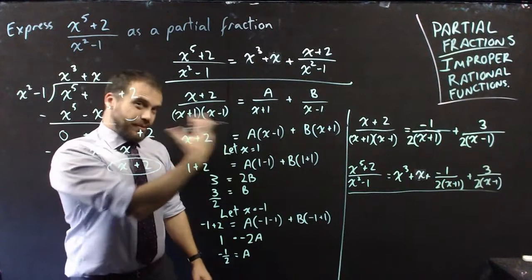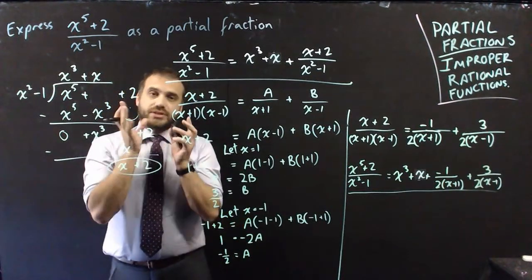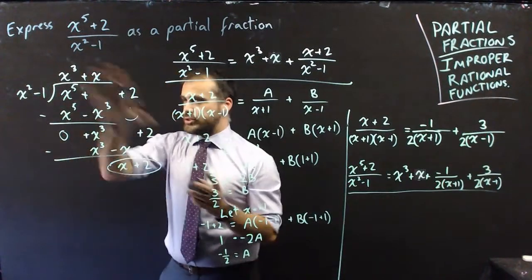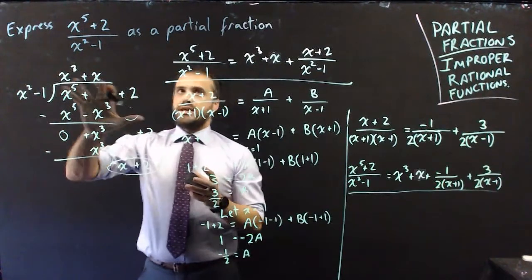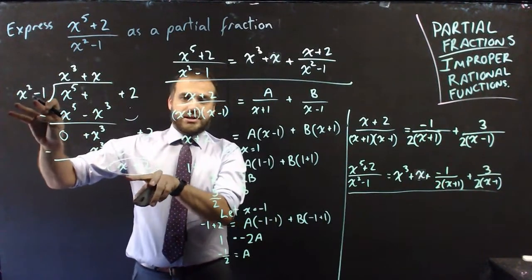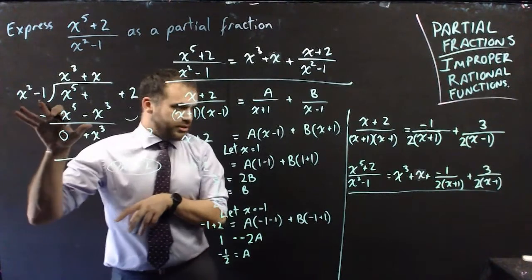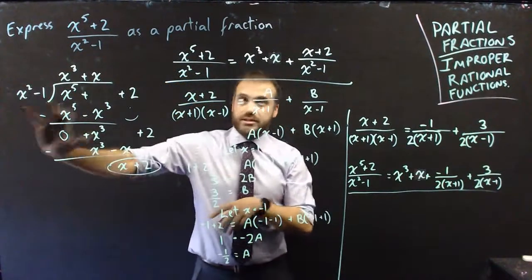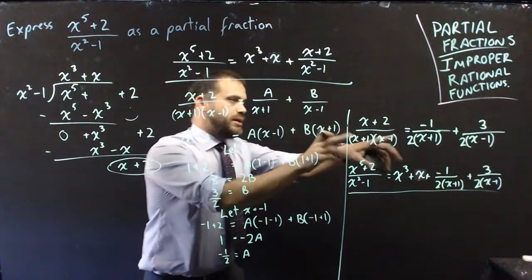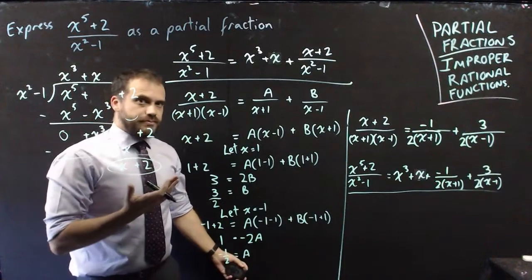That's partial fractions for improper rational functions. There's a real flow to it: if you see that it's an improper rational function, you've got to do polynomial division first. That gives you a polynomial part plus a proper fraction, and then you go through your regular partial fractions working to split that fraction into its partial fractions. That's it.